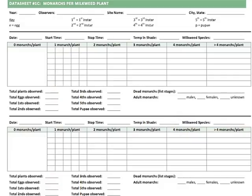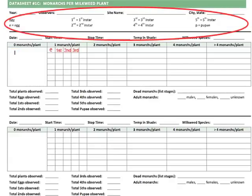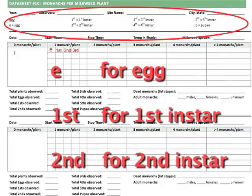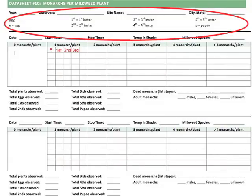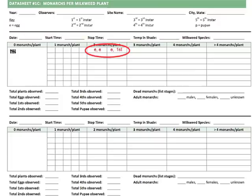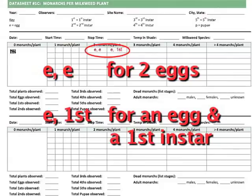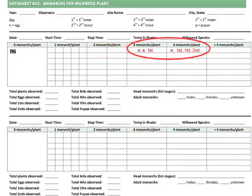To complete datasheet 1C, you'll record more details on each plant. When you look at a plant with no monarchs, place a tick mark in the box labeled zero monarchs per plant. When you see one monarch on a plant, use the code provided on the datasheet: write E for egg, 1st for a first instar, 2nd for a second instar, and so on — each box represents one milkweed plant. When you see two monarchs on a plant, write EE for two eggs or E-1st for an egg and a first instar, depending on the stage of the two monarchs you see. Do the same in the boxes under three monarchs per plant, four monarchs per plant, or greater than four monarchs per plant, as needed.